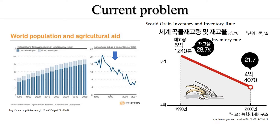As you can see based on the data presented, if the situation persists, you can expect that stock will run out. Therefore, the food problem is a very important issue and should be solved as soon as possible. To solve this problem, many scientists around the world are working on plants.